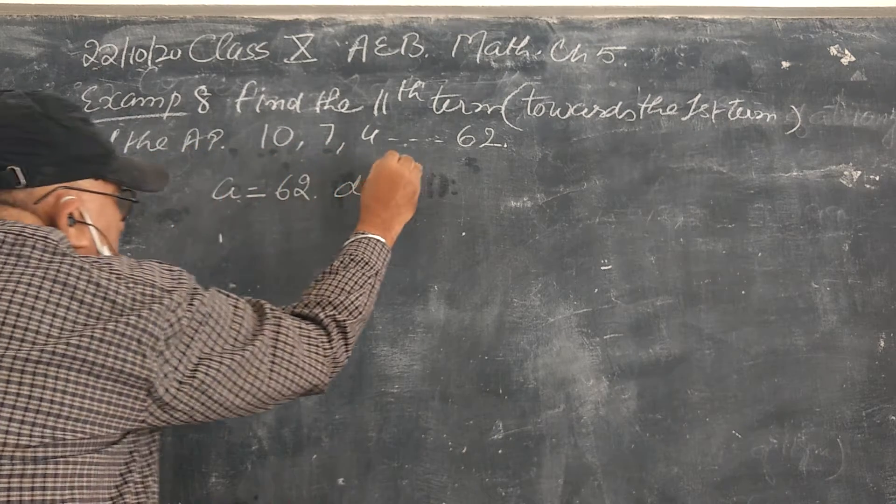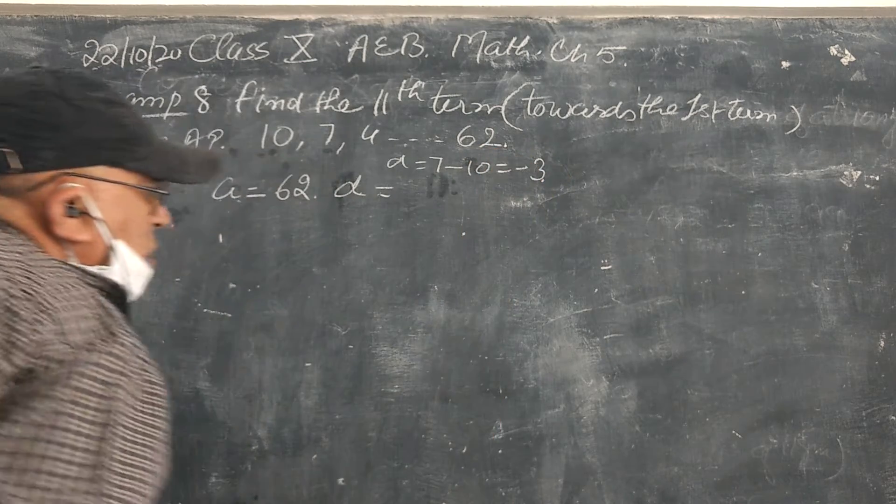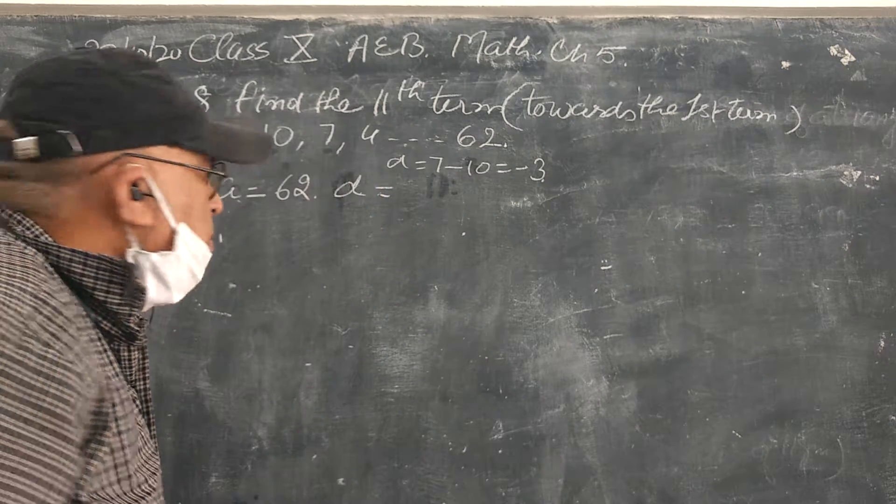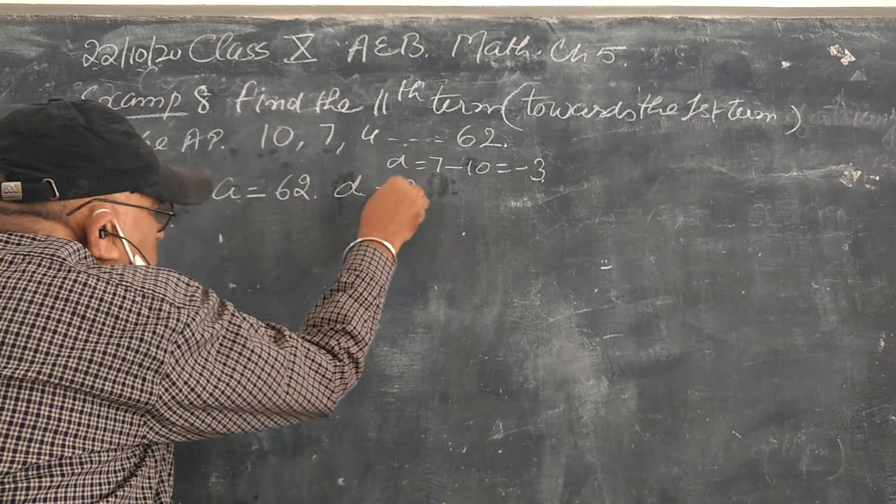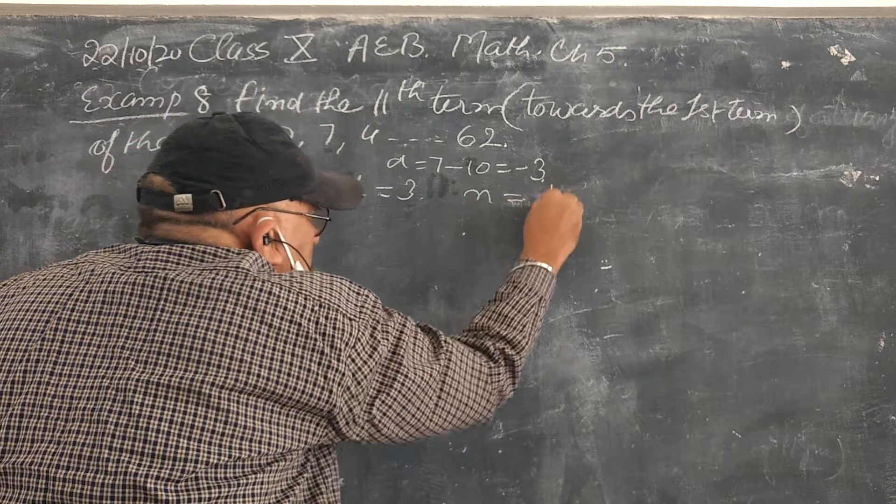B is equal to 7. 7-10 or A is equal to 3. So if we get the length of term, then D is equal to 3. A is equal to 63, and it is equal to 11.